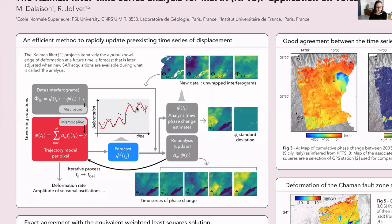A Kalman filter is a data assimilation algorithm which iteratively combines past estimates with new incoming data as it becomes available, in two processing steps: the forecast and the analysis. We apply the method to reconstruct the evolution of the interferometric phase at each time step, together with the parameters of a time-dependent model and associated uncertainties for each pixel independently.